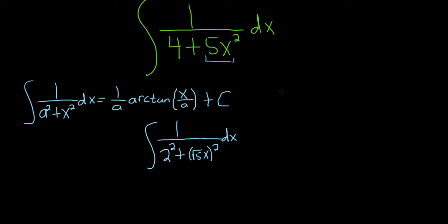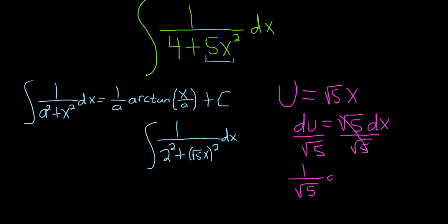So the only thing left to do here is to make a u substitution. We'll let u be equal to the square root of 5 times x. So then du, well, the square root of 5 is just a number, so it hangs out. And the derivative of x is 1. So this is just square root of 5 dx. Now we just have to divide by the square root of 5 so that what we have here looks like what's in the integral. So we get 1 over the square root of 5 du, and that's equal to dx. We're good to go.